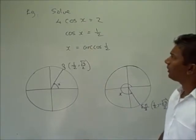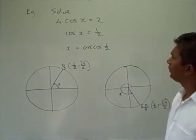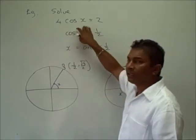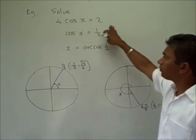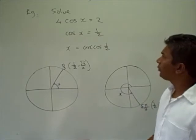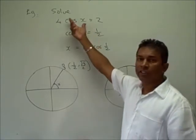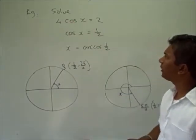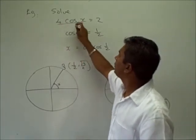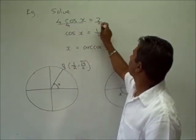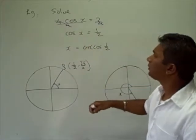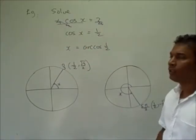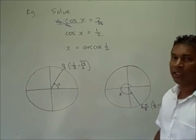Let's demonstrate this by looking at this example. Here we're asked to solve for cosine of x is equal to 2. So our first step is to get the cosine function by itself. To get the cosine function by itself, we can divide both sides by 4. So here our 4 will cancel, and cosine x is equal to 2 over 4, which reduces to 1 half.